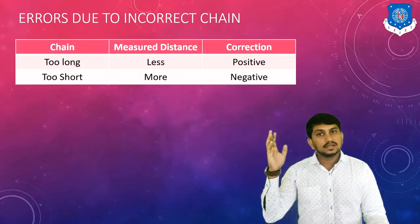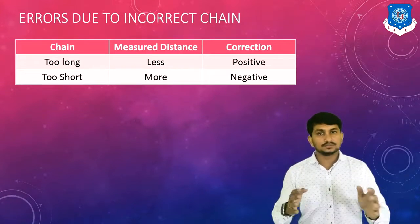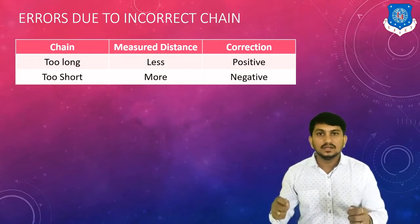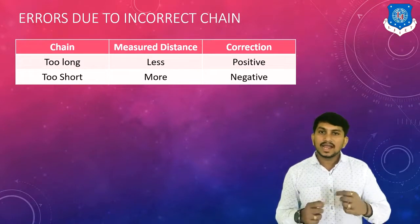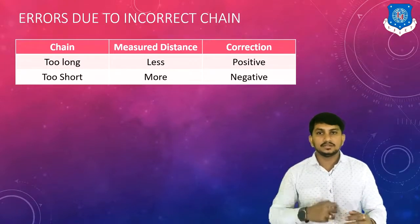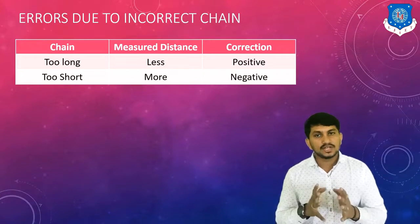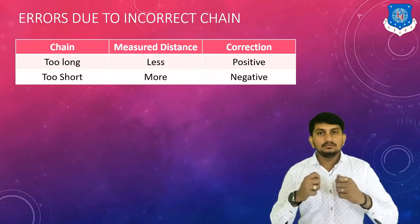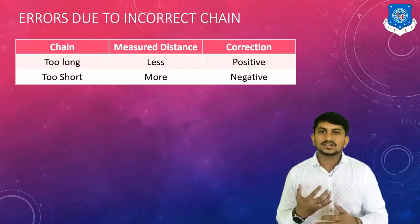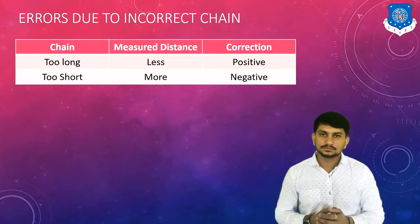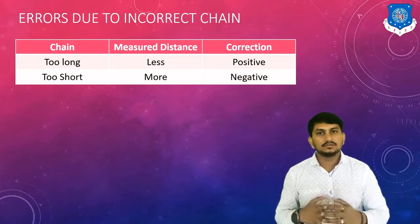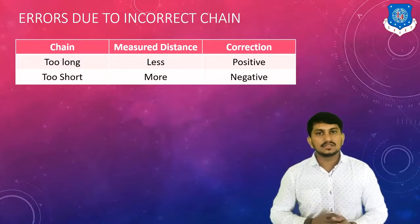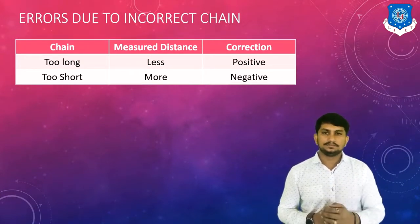We will understand these errors by this table. If the chain or tape is too long, meaning the length is increased, then the actual measured distance will be less, and we correct it by adding the errors — so the correction will be positive. If the chain or tape is too short, meaning the length is reduced, then the actual measured distance is more, and the correction should be negative — we deduct the error from the actual measured distance.